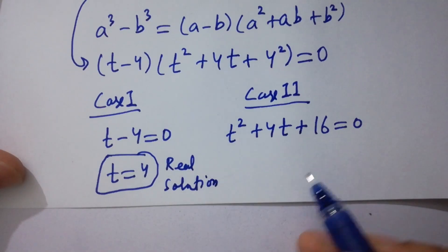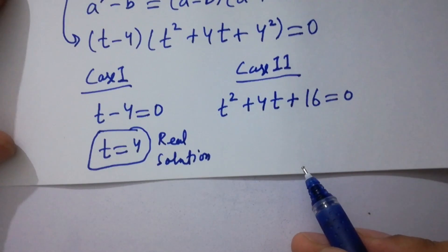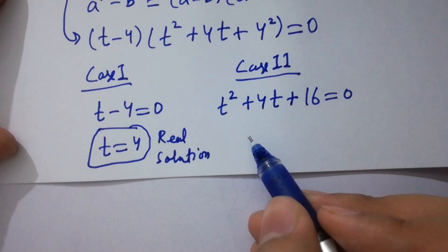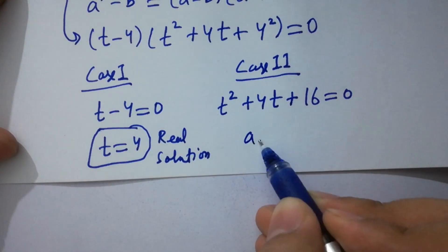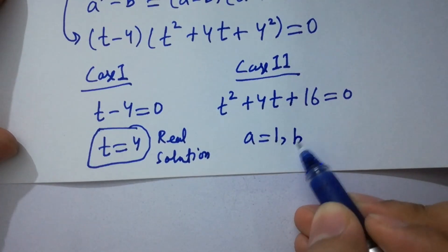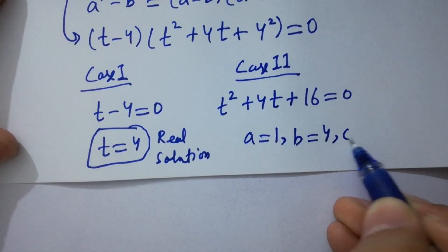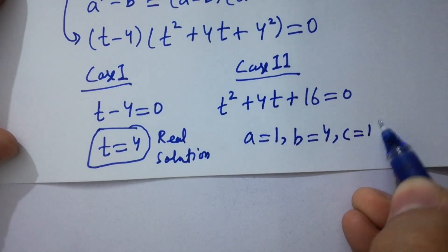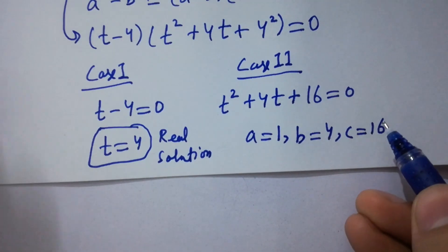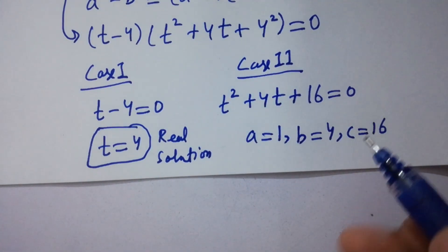For the second case we have a quadratic equation, so we have a equals 1, b equals 4, and c equals 16. We will now apply the quadratic formula.